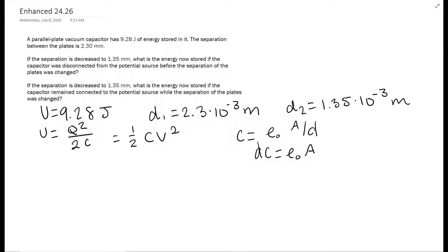So ε₀ is a constant. So basically, that's not changing. So we're going to have d₁C₁ is equal to d₂C₂.